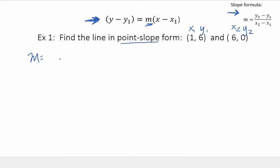So if I plug those values into my slope formula, I say 0 minus 6 over 6 minus 1. I get negative 6 over 5. That's my slope. So now I know what I plug into the formula for m.